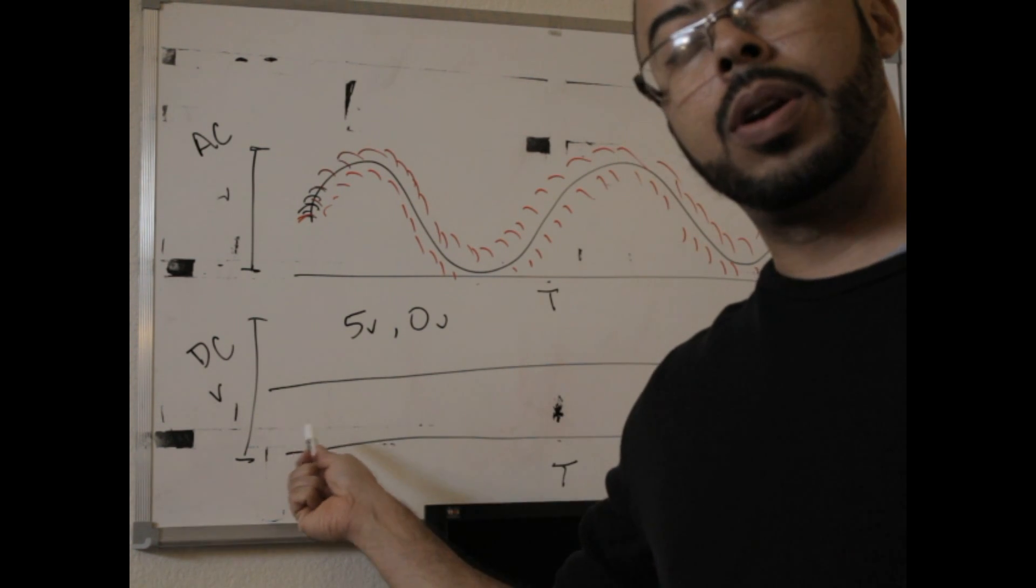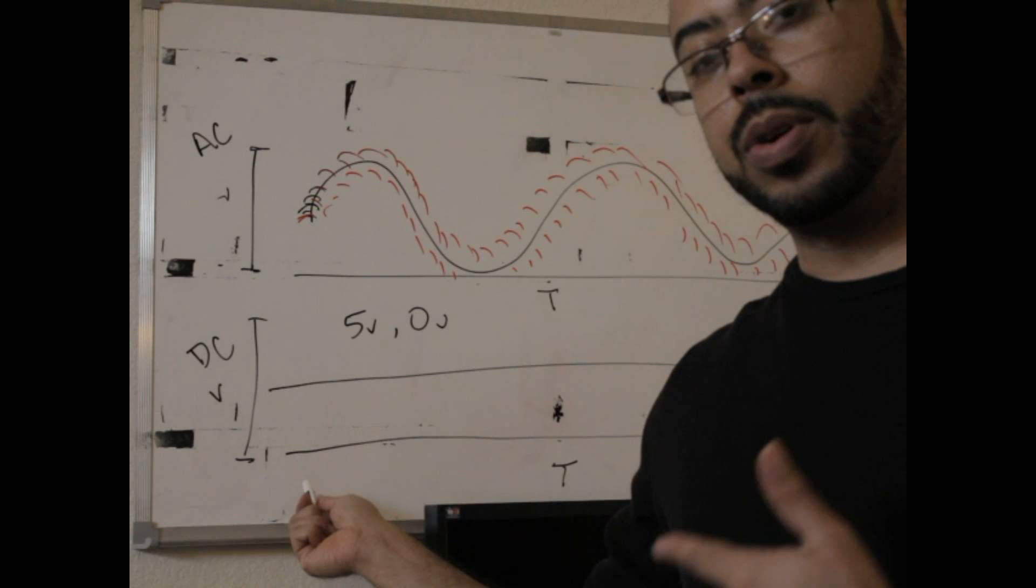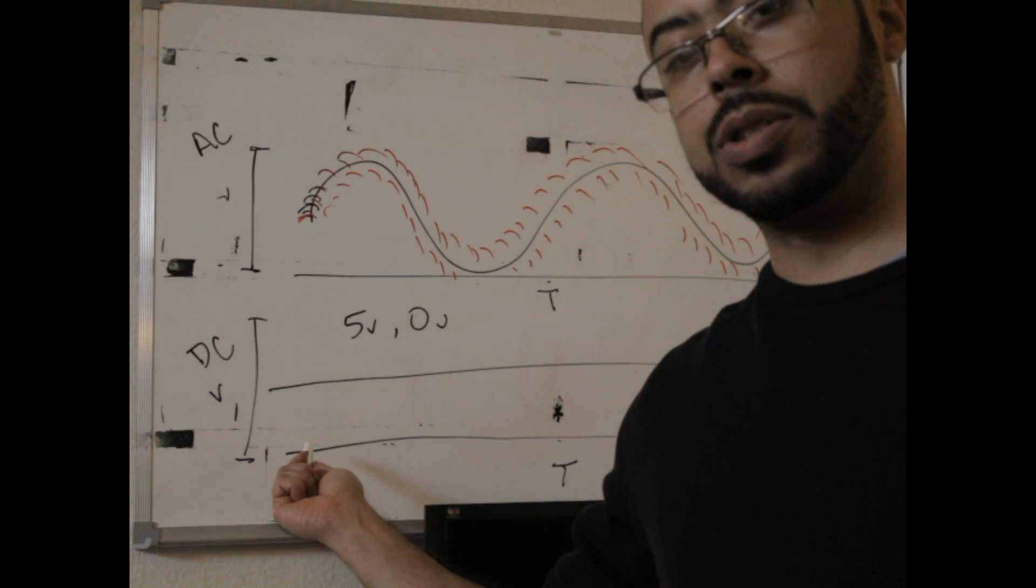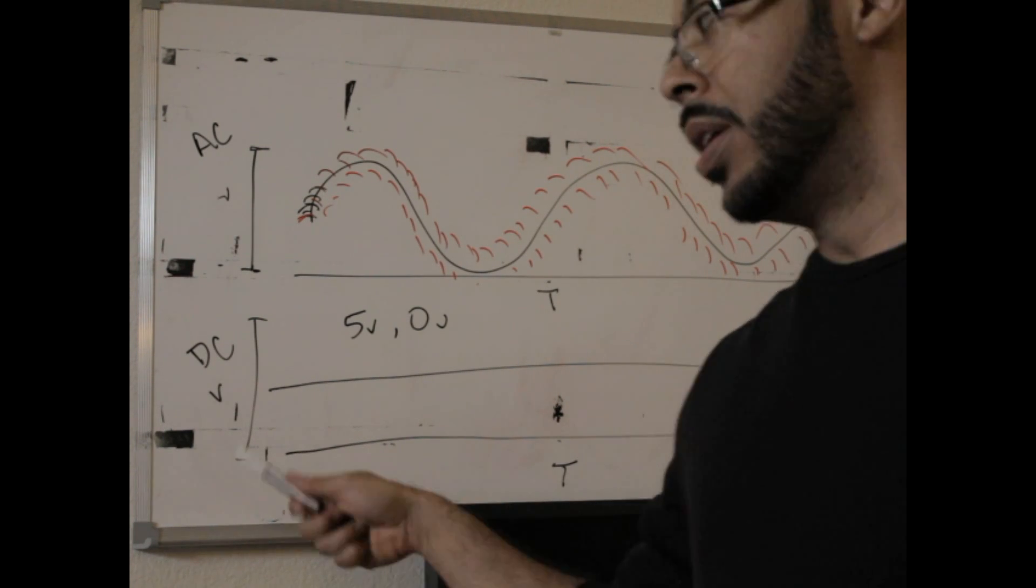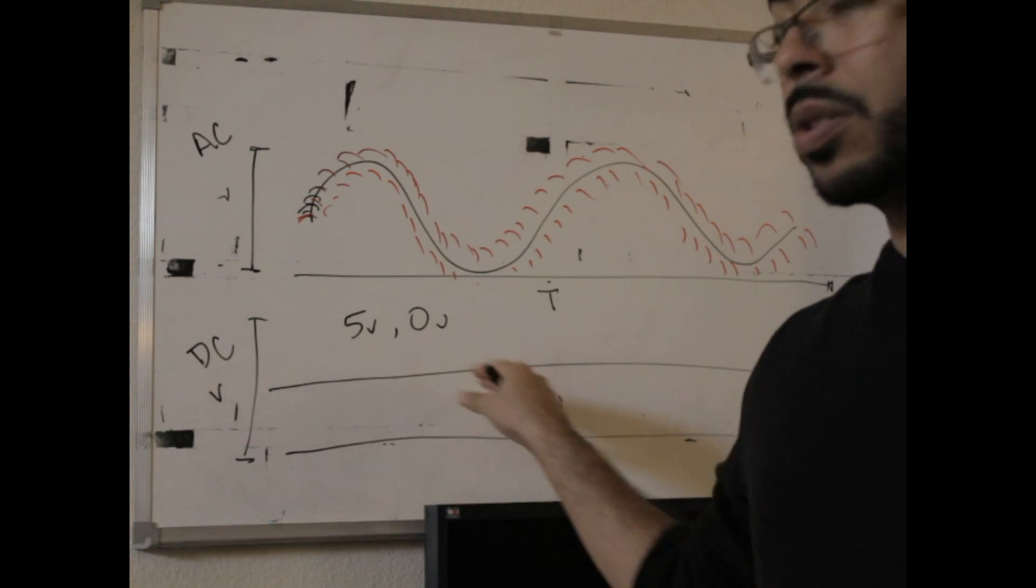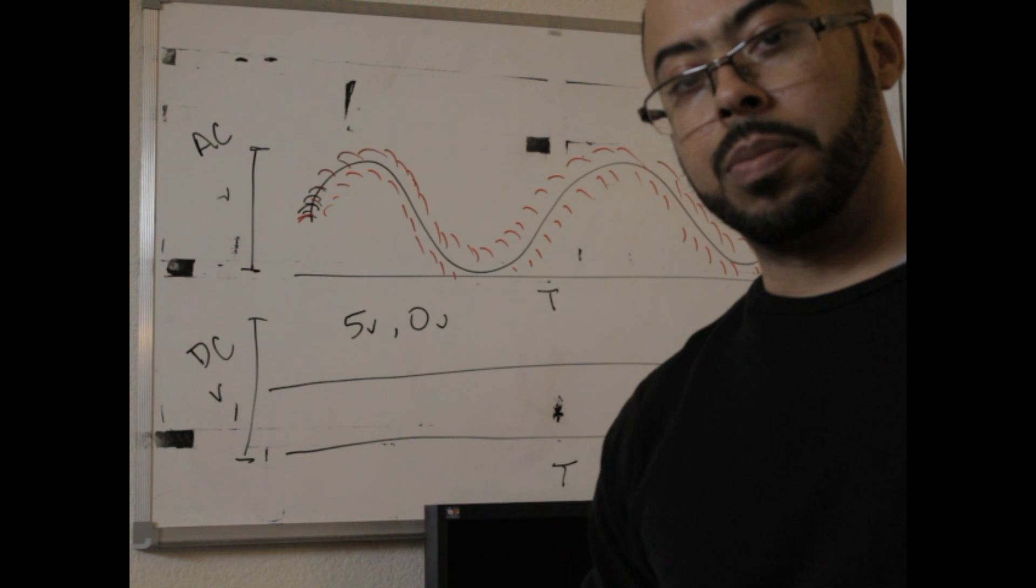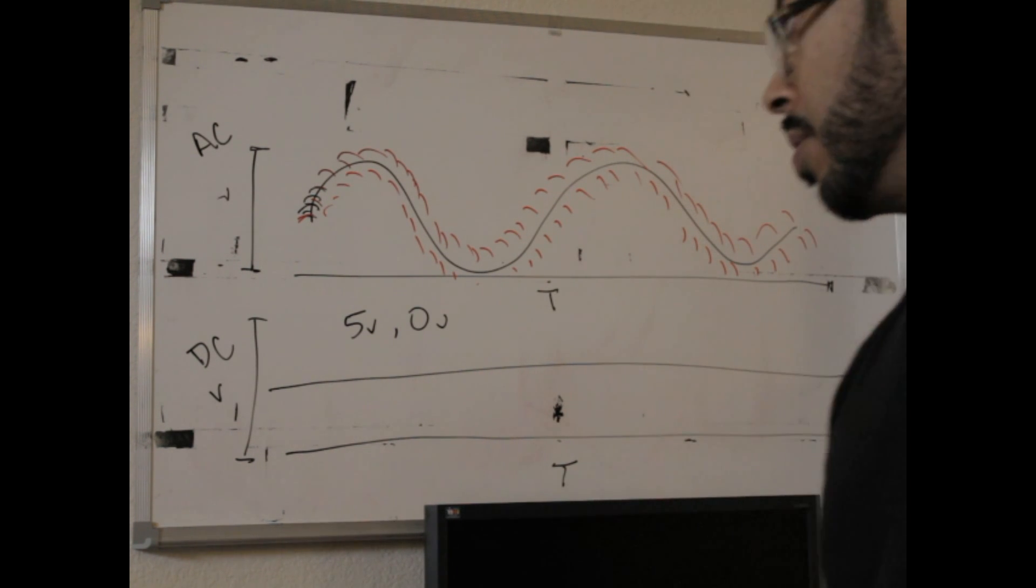Direct current, because the current never changes, and the current doesn't change because the voltage doesn't change, basic Ohm's law does not have this property. As soon as the voltage hits its maximum and sits there, there is no longer an electromagnetic property that exists here.